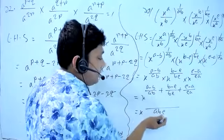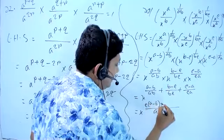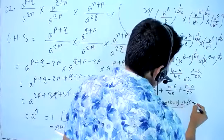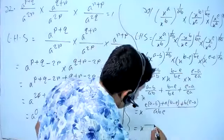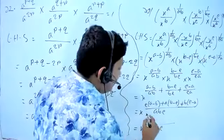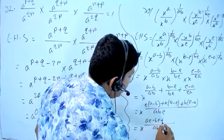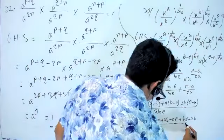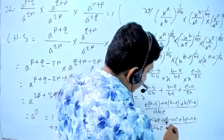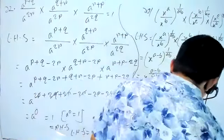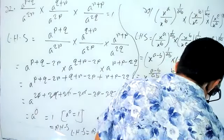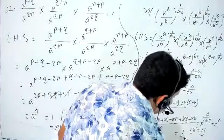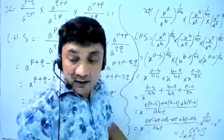Taking common denominator abc, we get: [ac(a-b) + ab(b-c) + bc(c-a)]/abc. The numerator becomes a²c - abc + ab² - abc + bc² - abc, which simplifies to zero. Therefore x^0/abc = x^0 = 1, which equals the right hand side. Proved.